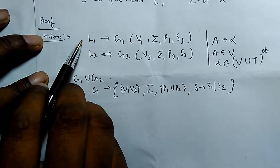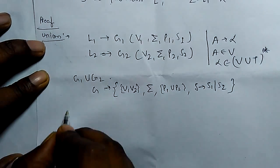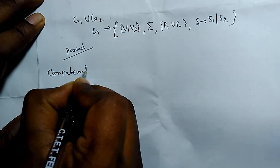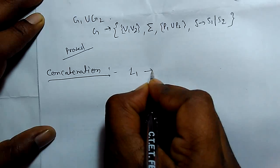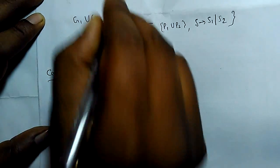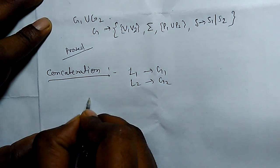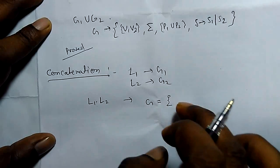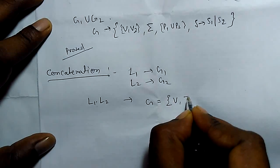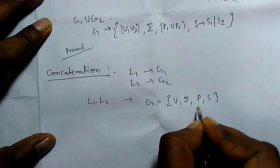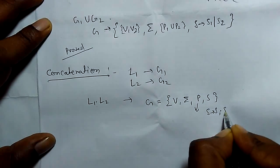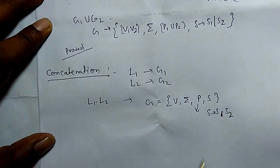The new start symbol S should derive S1 or S2. All productions taken from G1 and G2 are in the form A derives alpha. So two context free languages are closed under union — this is proved. Similarly for concatenation: given L1 with G1 and L2 with G2, the new grammar G contains all variables, sigma, new production rules P, and a new start symbol S where S derives S1 concatenated with S2.